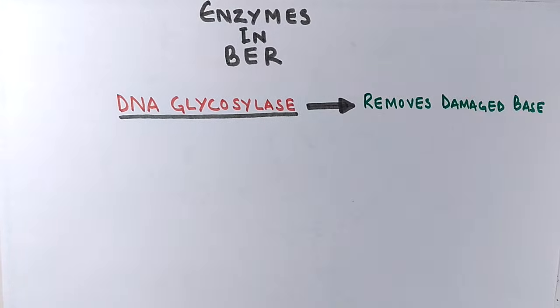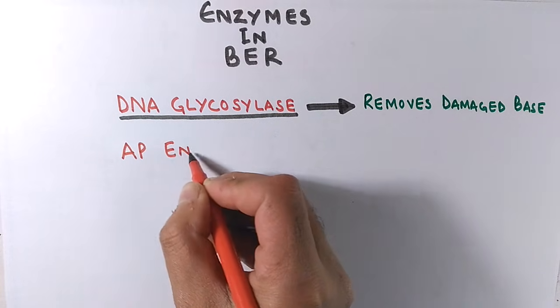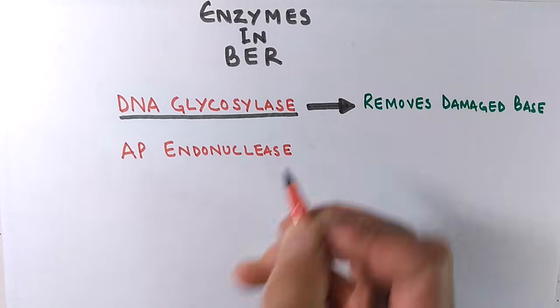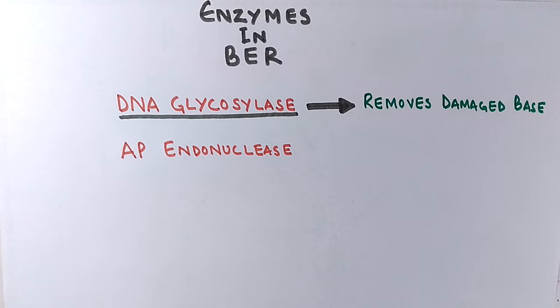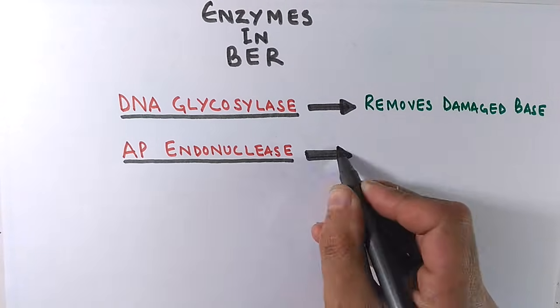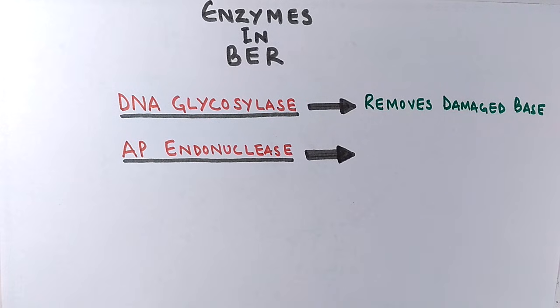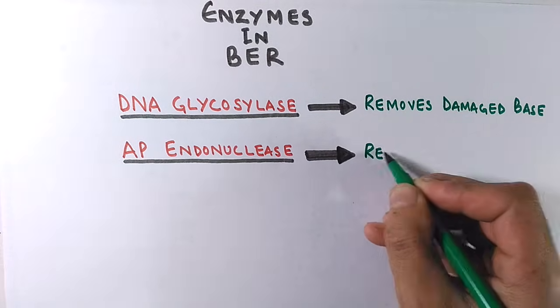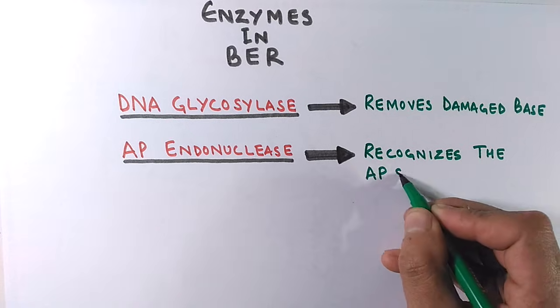Then we have AP endonuclease—apurinic or apyrimidinic endonuclease—depending upon which base is damaged, either purine or pyrimidine. This AP endonuclease recognizes the AP site, that's a missing base site, and creates a nick in the phosphodiester backbone.